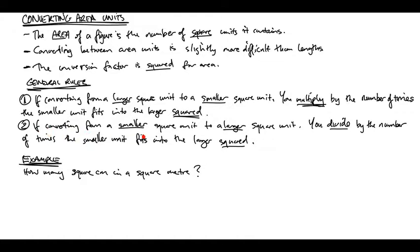And obviously the opposite is the case. If you're converting from a smaller square unit to a larger square unit, you divide. And that's by the number of times the smaller unit fits into the big, but this time squared again. So let's say you are going from centimeter squared to square meters. You would divide by ten thousand. Why? Because the smaller unit of centimeters fits a hundred times into the larger unit of meters, and then you square it. Because we're talking area.